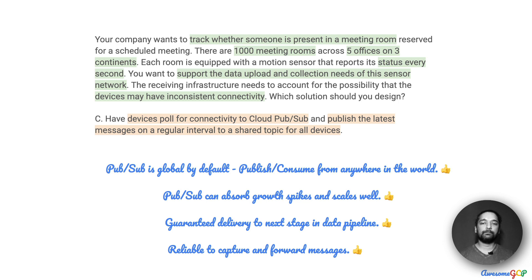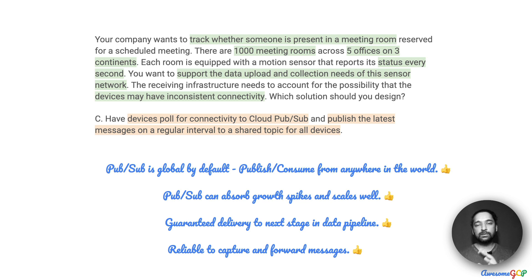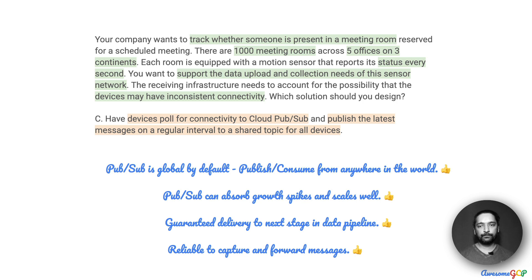Pub/Sub also guarantees delivery to the next stage in the data pipeline. Even if the connectivity from Pub/Sub to the data processing pipeline has some issues, Pub/Sub can guarantee delivery of those events at some point in time. So it is very reliable for capturing and forwarding messages. On these points, Option C is looking really good.